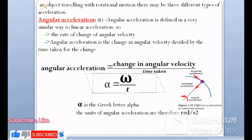Any object traveling with rotational motion may have three different types of accelerations: tangential acceleration, centripetal acceleration, and angular acceleration.